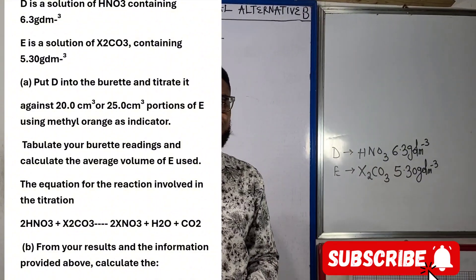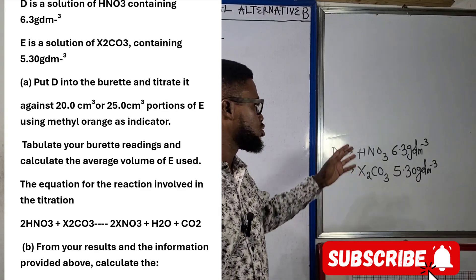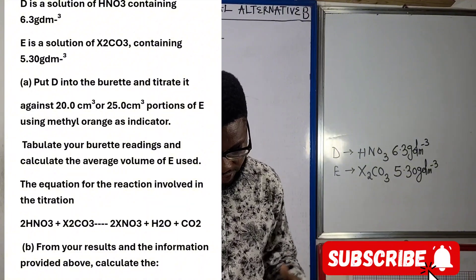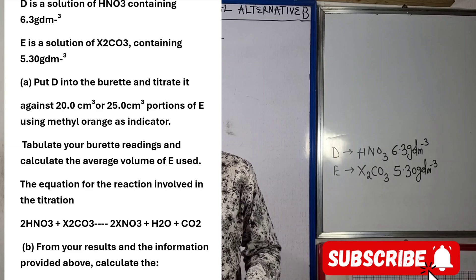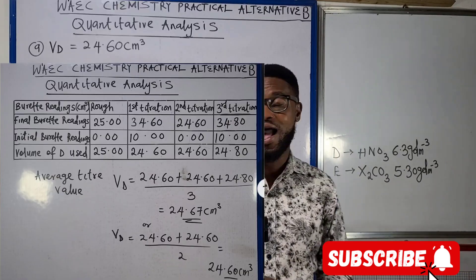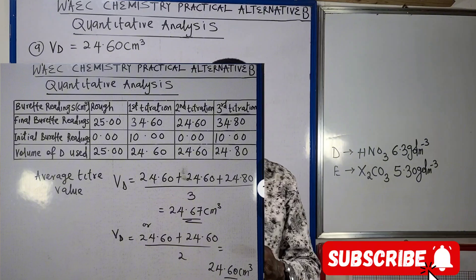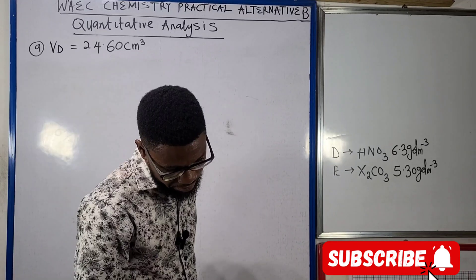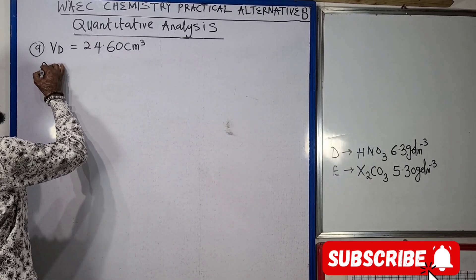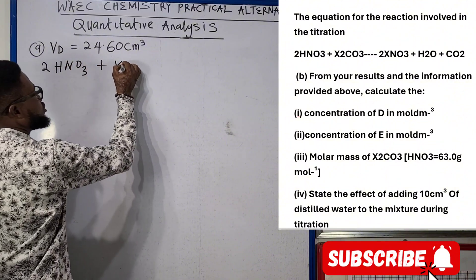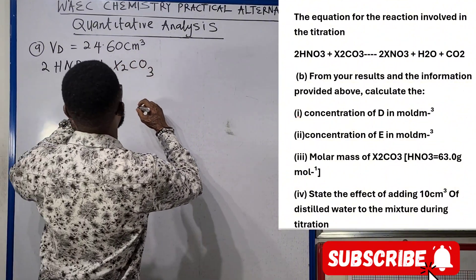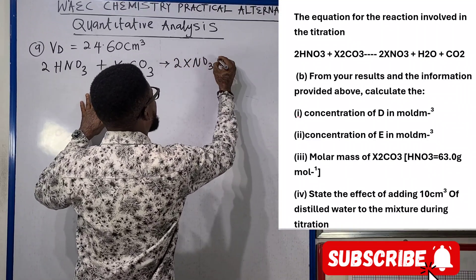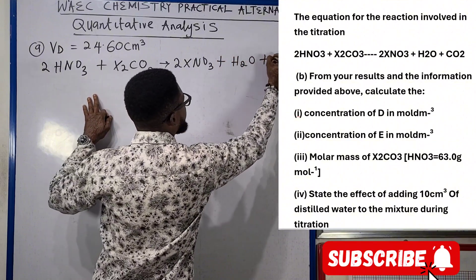When you titrate with your nitric acid from the burette, there will be a color change at the endpoint from yellow to light pink. Tabulate your burette readings and calculate the average volume. As you can see on screen, the average titer value is 24.60 cm³. We were given the equation for the reaction: 2HNO₃ + X₂CO₃ → 2XNO₃ + H₂O + CO₂.